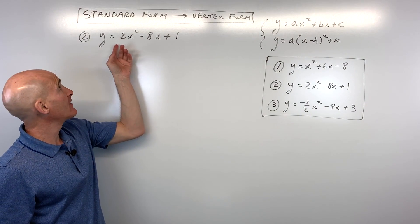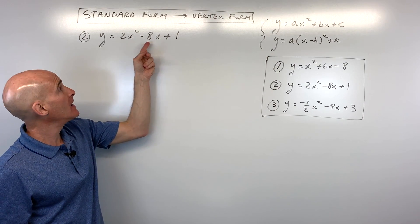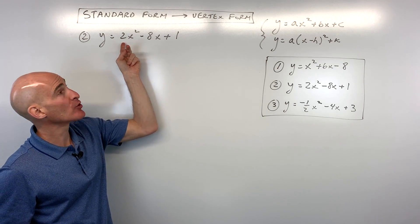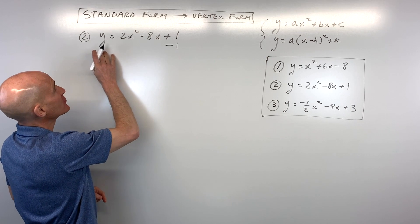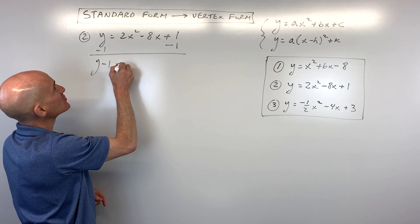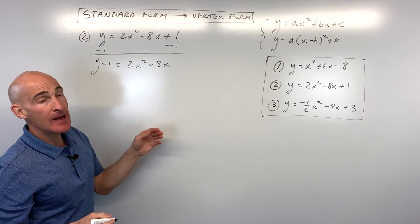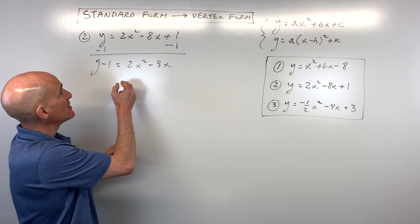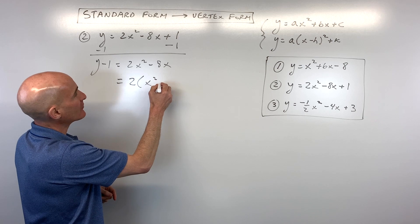Number 2: y equals 2x squared minus 8x plus 1. Notice the leading coefficient a is not equal to 1, so this is a little more challenging. The first step is still to get the constant on the other side with y — just subtract 1 — giving us y minus 1 equals 2 times x squared minus 8x. Now factor out this 2 from both terms, like doing the distributive property backwards, and leave a little space for completing the square.